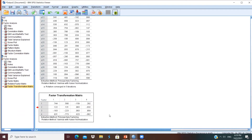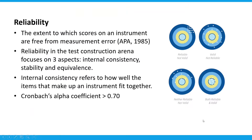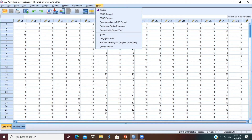The last analysis part for EFA will be testing the reliability of the instrument. Reliability refers to the extent to which scores on an instrument are free from measurement errors. There are three aspects of reliability: internal consistency, stability, and equivalence. This video will focus on internal consistency, which is frequently represented by Cronbach's alpha coefficient. A minimum value of 0.7 for Cronbach's alpha is considered acceptable for a reliable instrument.